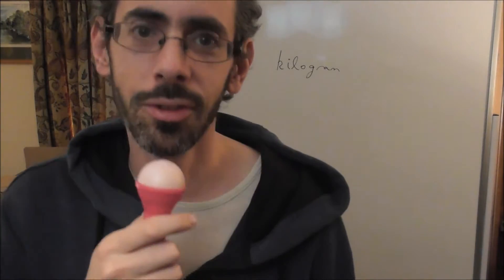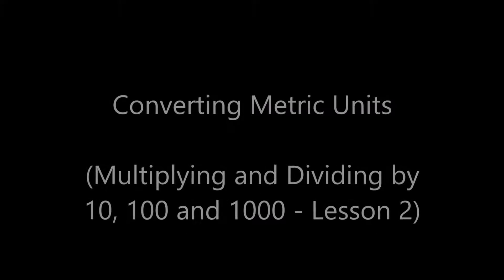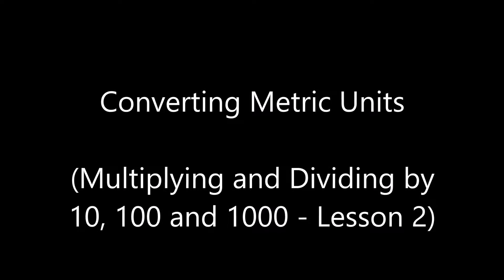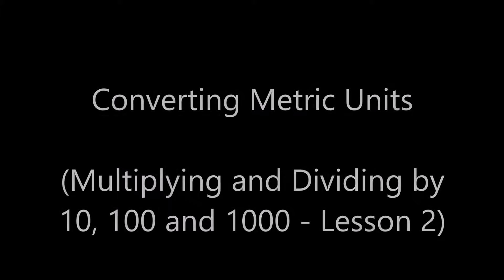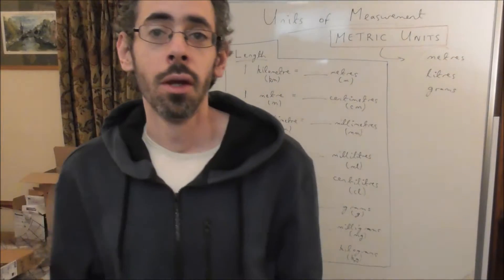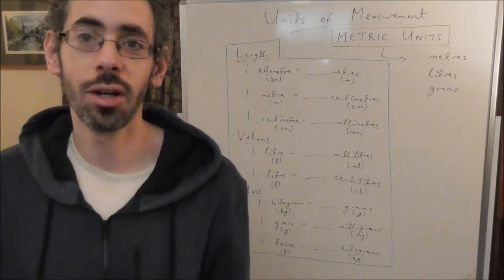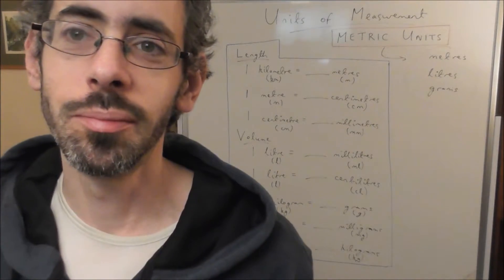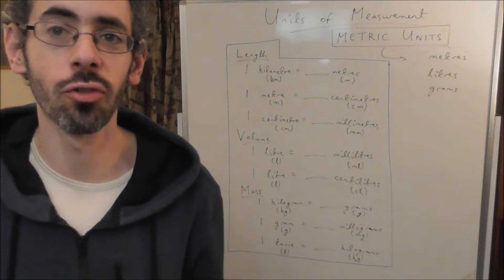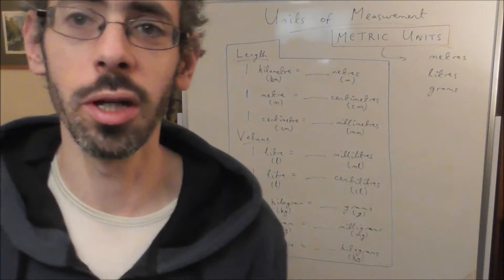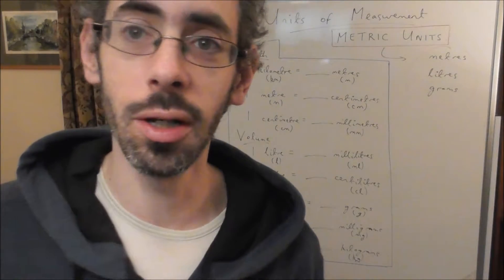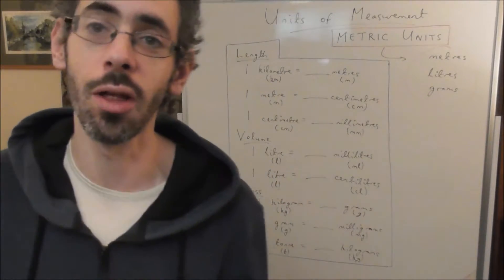Sorry about that joke, I'm kind of running out of math jokes, so give me a break. Right, let's start the lesson. So we're going to be doing — this is the second lesson on multiplying and dividing by ten, a hundred and a thousand. Last lesson I showed you how to multiply and divide by ten, a hundred and a thousand, and in this lesson we're going to be applying that knowledge to converting measurements from one unit to another unit.